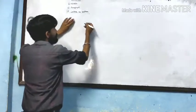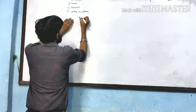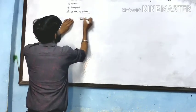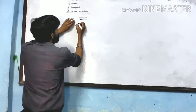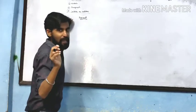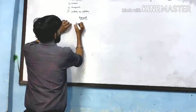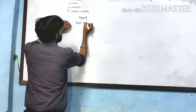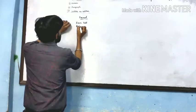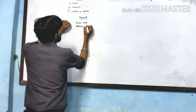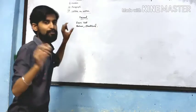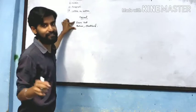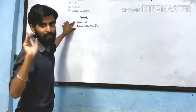First of all, letter to editor. For writing letter to editor, what is the format? First we will write the sender's address. For example: Exam Hall, Book-a-Room Journal — this will be your address. This is the sender's address, meaning who is sending this letter.